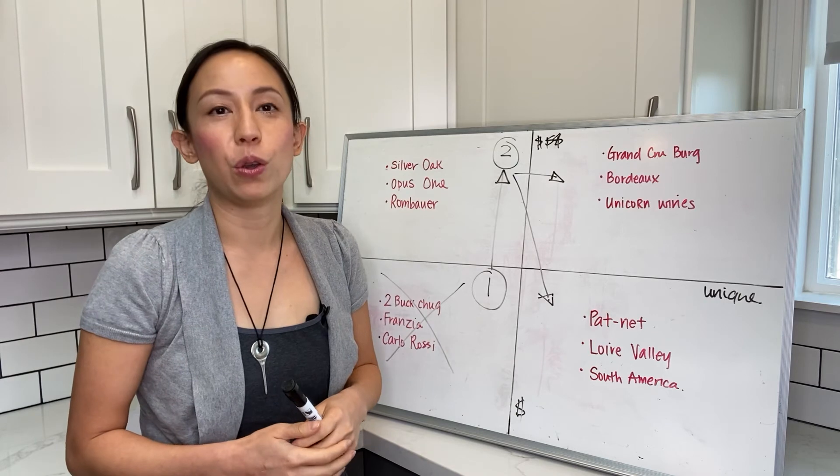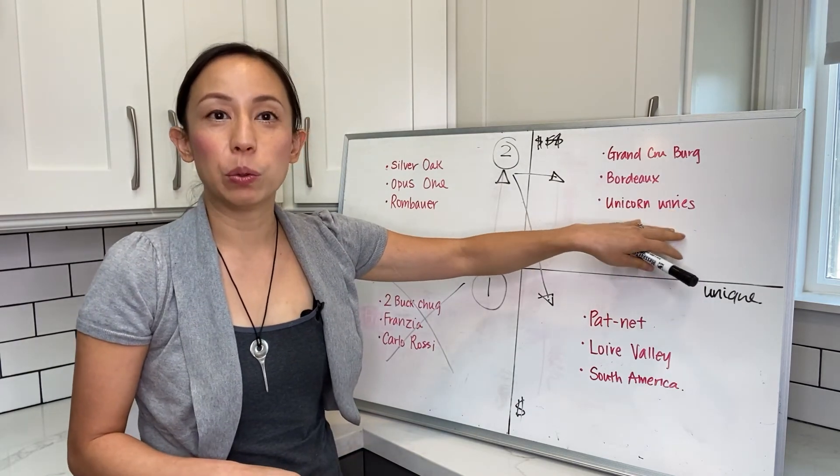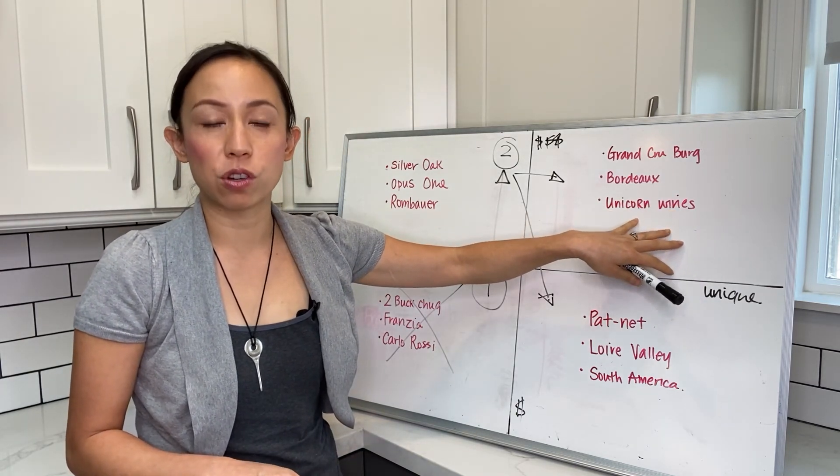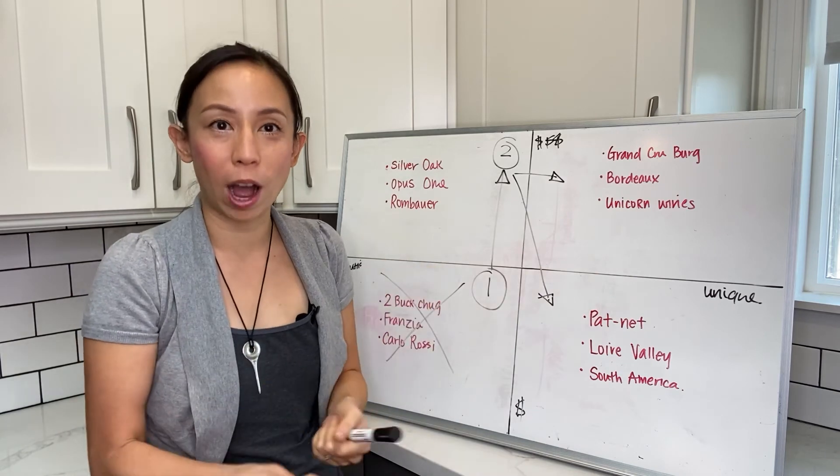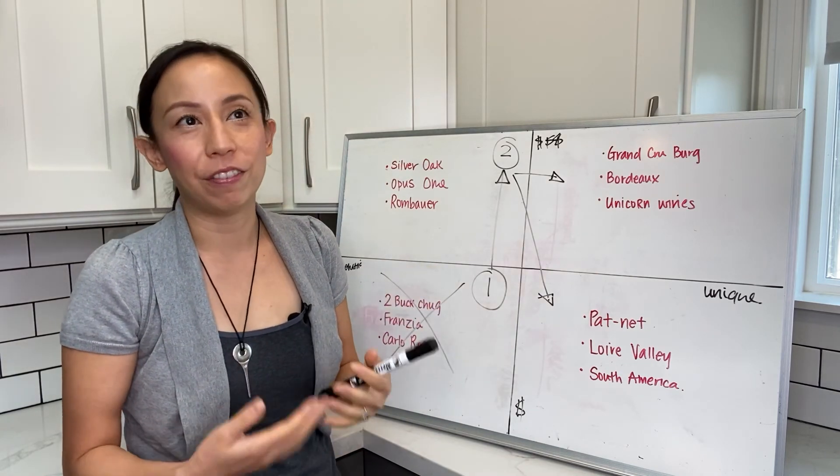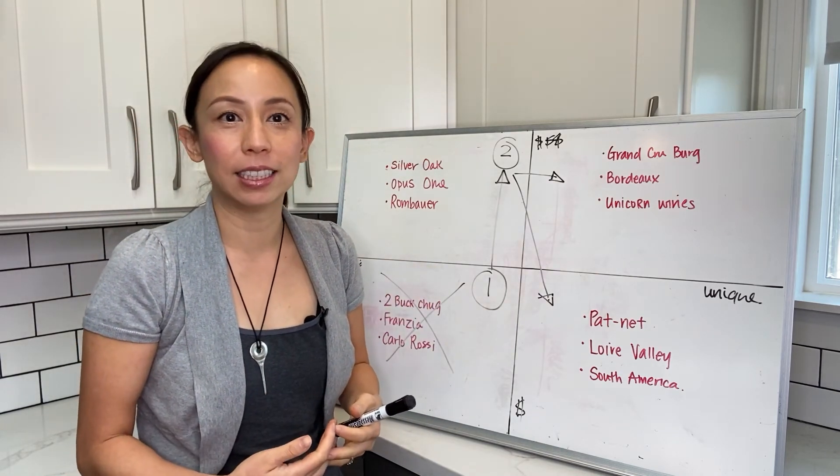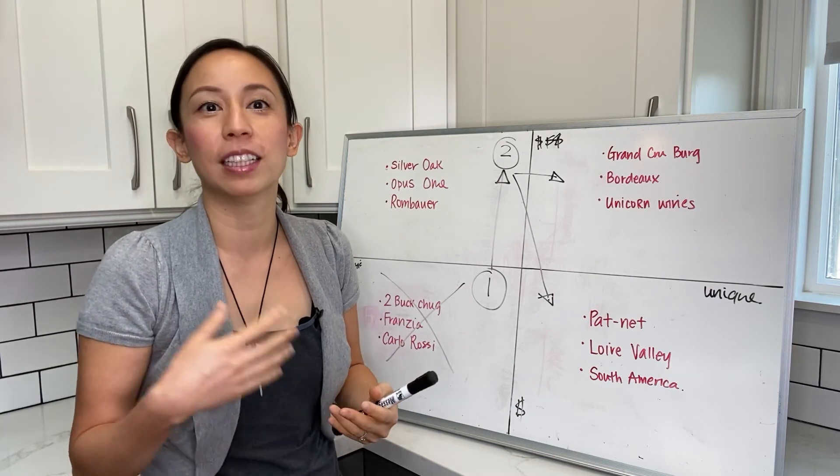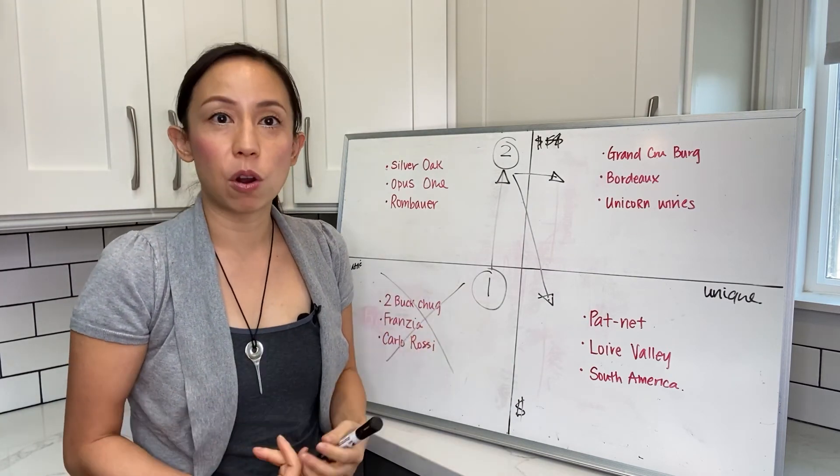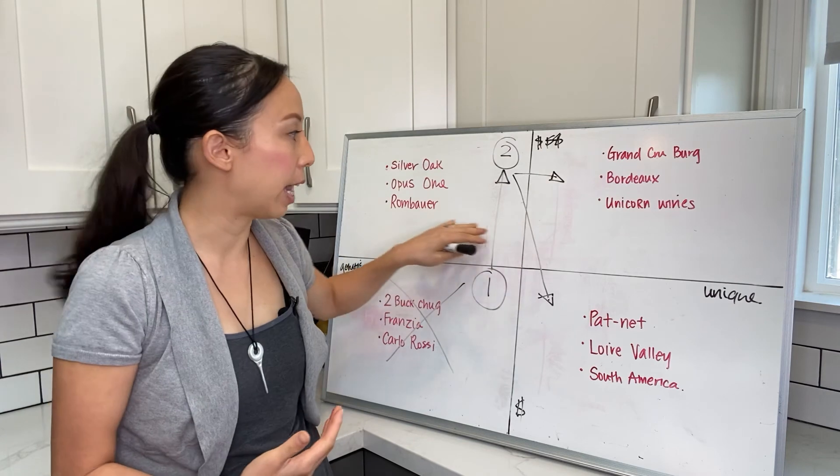A lot of the time with auction, you also have to be aware that you don't get too excited and overbid. Many auction houses, after the hammer drops, there's usually another 17 to 20 percent buyer's fee plus storage fee plus shipping fee.